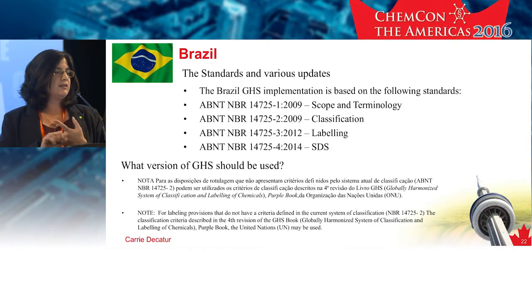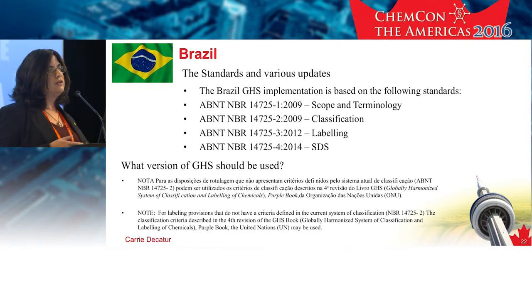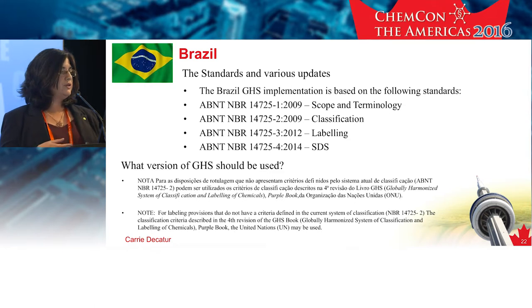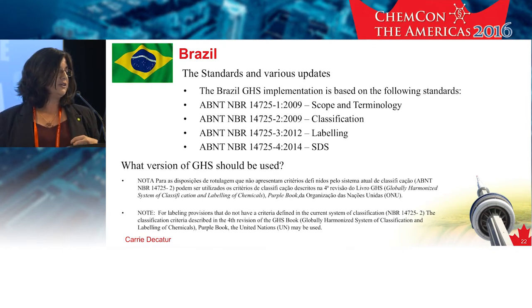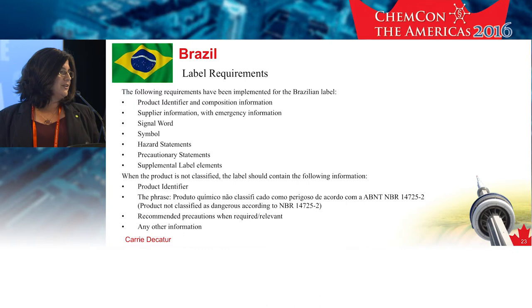We talked a bit about Brazil. We've got the four standards, and we know that the classification one has not been updated. The labeling and SDS appear to be based on Revision 4. For hazard classes added to the UN between the classification standard and the updated labeling and SDS, the labeling standard added a provision stating that if labeling provisions do not have criteria defined in the current classification — NBR 14725-2 — the classification criteria of the fourth revision of the GHS can be used. This indicates you can use the Rev 4 classification scheme for things like chemically unstable flammable gases A and B, aerosols category 3. The difference is that when a product is not classified, you still have to have a label with a product identifier stating it's not classified according to 14725-2, plus any recommended precautions.